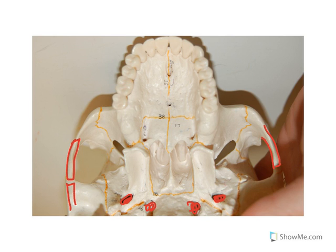Those are the primary structures that we can see. One last thing to make special note of: you can see the inferior orbital fissure here from this view. This concludes my video on the skull that we can see from this inferior view. Thank you.